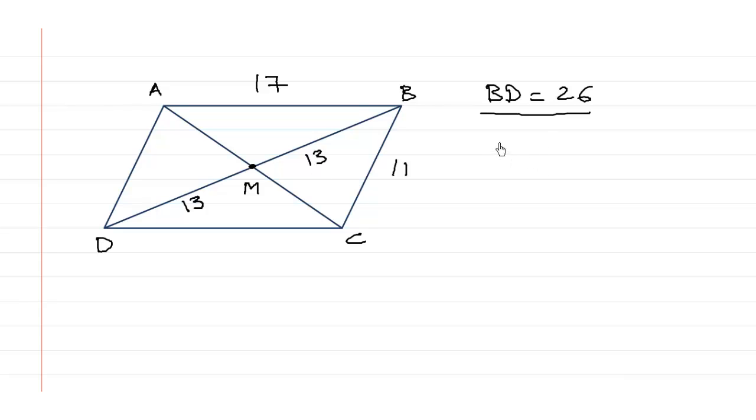Now we are asked to find the other diagonal. So we need to find how much is AC. Now if you concentrate, if you look at this carefully, we can say that this particular triangle ABC, this particular triangle, we can say that this BM is the median on side AC. That's because M is the midpoint.